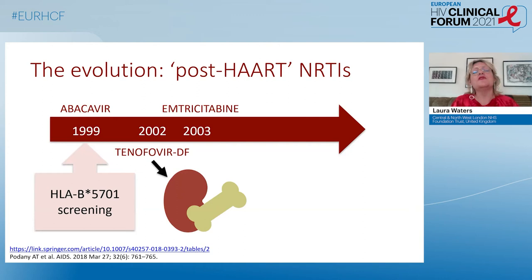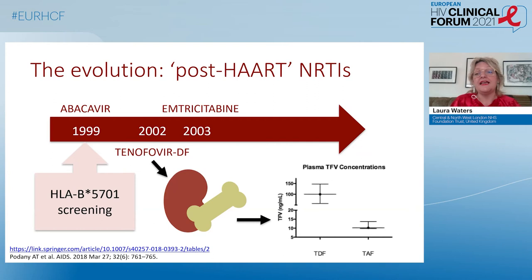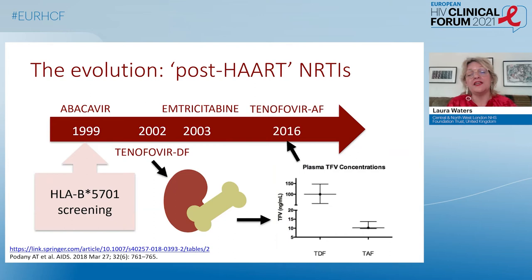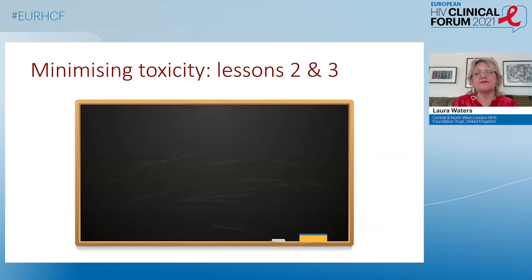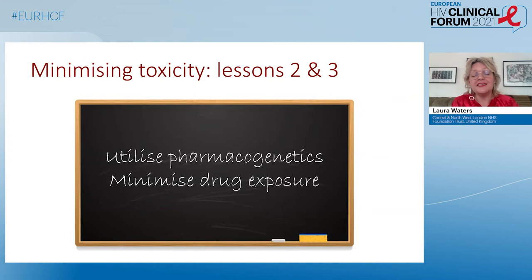Tenofovir DF can be associated with renal and bone toxicity, and the understanding that this correlated with plasma tenofovir exposure triggered the development of TAF, or tenofovir alafenamide, a new formulation available since 2016. Thanks to lower plasma tenofovir concentrations, we see less impact on renal and bone markers. Lessons two and three: utilising pharmacogenetics where we can — abacavir remains the most successful example of pharmacogenetic implementation in medicine — and minimising drug exposure where possible.